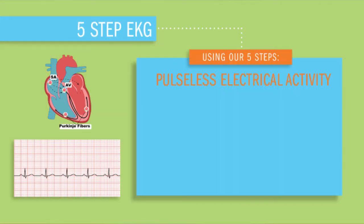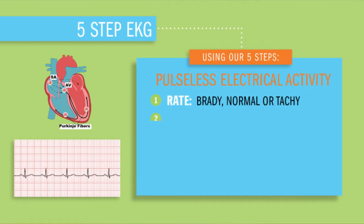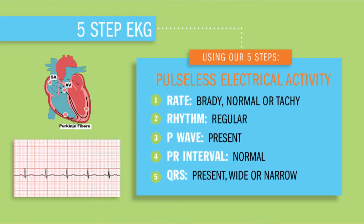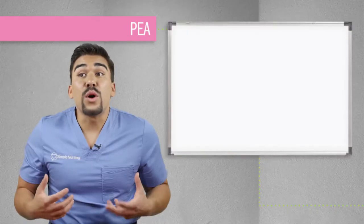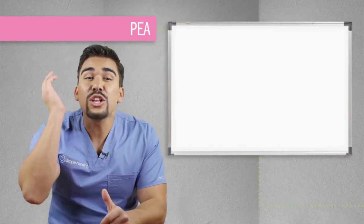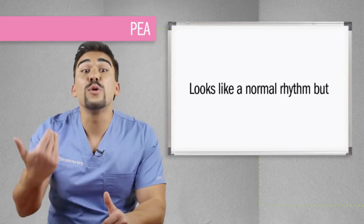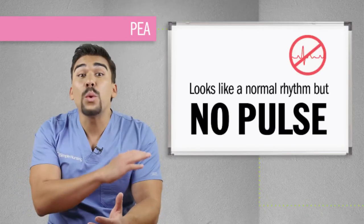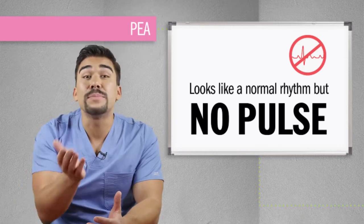So what is this going to look like on an EKG? Well, using our five steps, let's interpret this EKG. Step number one: the rate can be brady, normal, or tachy. The rhythm's going to be regular. The P wave will be present and normal. Same with PR interval — normal. And the QRS waves will be present. Honestly, this is a weird and really creepy rhythm, because it's going to look like normal sinus rhythm most of the time. But once you go check for a pulse, there won't be any, and that's how you know it's PEA.